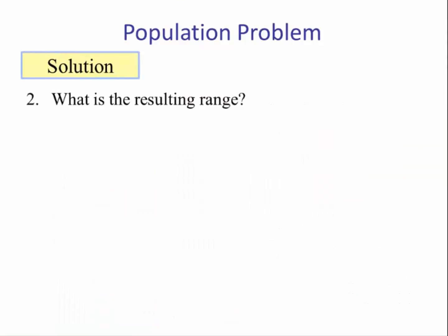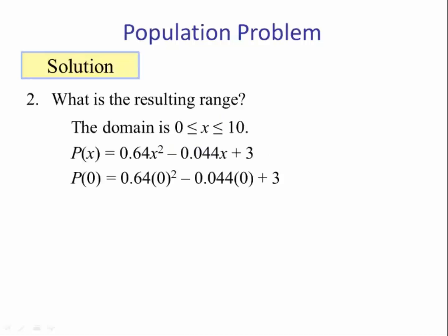Number two: what is the resulting range for the given domain? Since this is an increasing function, we can find the value of P(x) when x is 0. This will be the smallest value. And then we can find what is P of 10, and this will be the largest y value, because this is an increasing function. So P of 0: we substitute the value of 0 in for x and follow the order of operations, and we get a value of 3. P of 10 turns out to be 66.56.